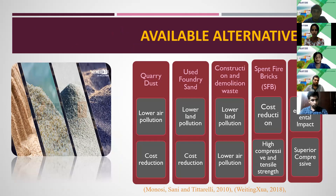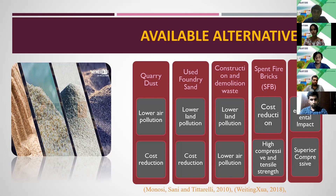Identified alternatives for river sand are quarry dust, used foundry sand, construction and demolition waste, spent fire bricks, and cooling sand. Quarry dust offers lower air pollution and low cost as a by-product of crushing rocks. Used foundry sand offers lower land pollution and low cost as a by-product of the metal casting industry. Using construction and demolition waste can lower land and air pollution. Spent fire bricks have low cost and high compressive and tensile strength.